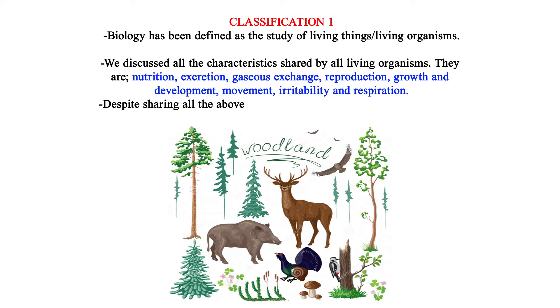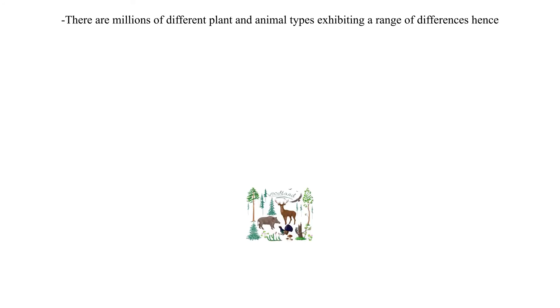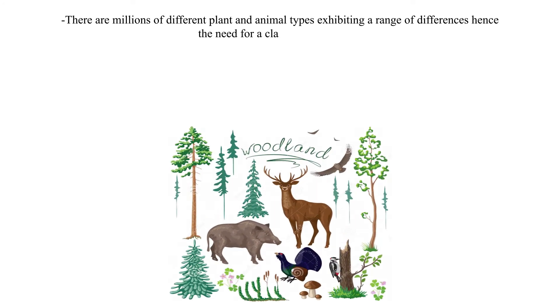Despite sharing all the above-mentioned characteristics, living organisms — in particular plants and animals — also differ in so many ways. There are millions of different plant and animal types exhibiting a range of differences, hence the need for a classification system.